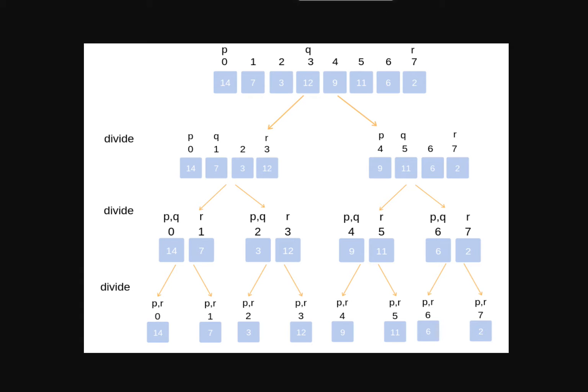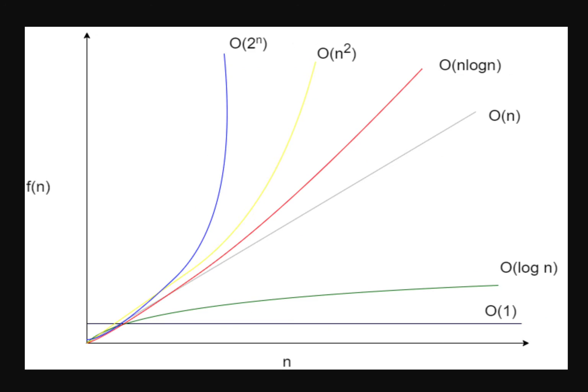And so n log n is faster than n squared. If we look at this chart here, time complexity chart, we have n squared is the yellow line, n log n the red line, n is the gray line, and log n is the green line. So this kind of tells you basically which one is faster than the other or which one would require less operations.